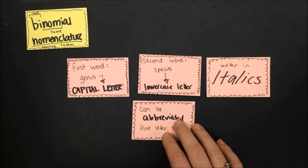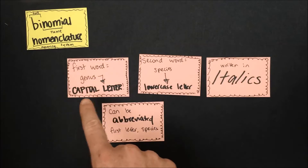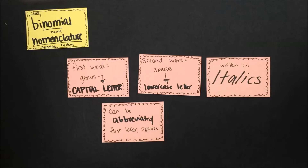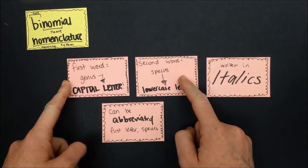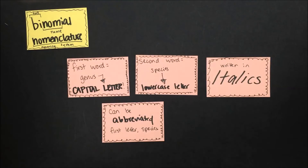We can abbreviate the genus name with just a single capital letter, but you only want to do that after you've specified the full scientific name at least once in whatever you are writing.